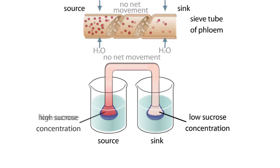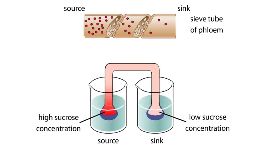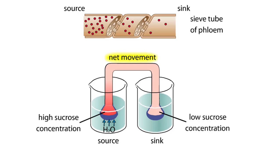In an experiment where one funnel contains a high concentration of sucrose and the other contains a low concentration, water initially diffuses into both funnels, but soon only diffuses into the source end. As water flows into the source end, the solution is pushed through the tube and water is forced out the other end.